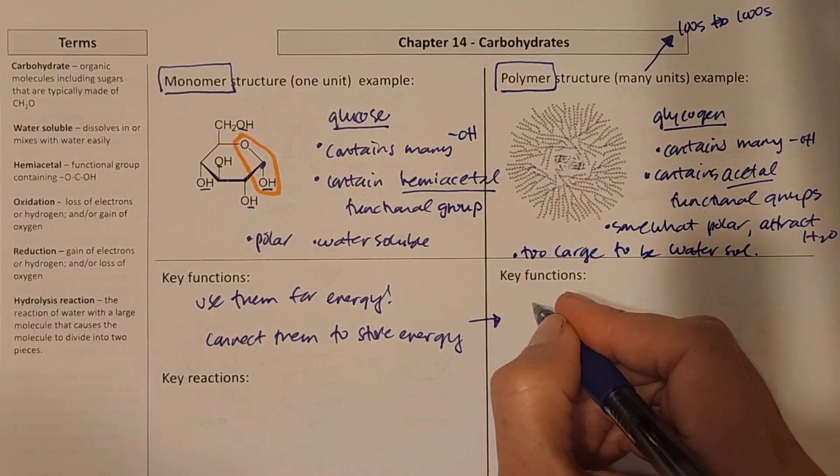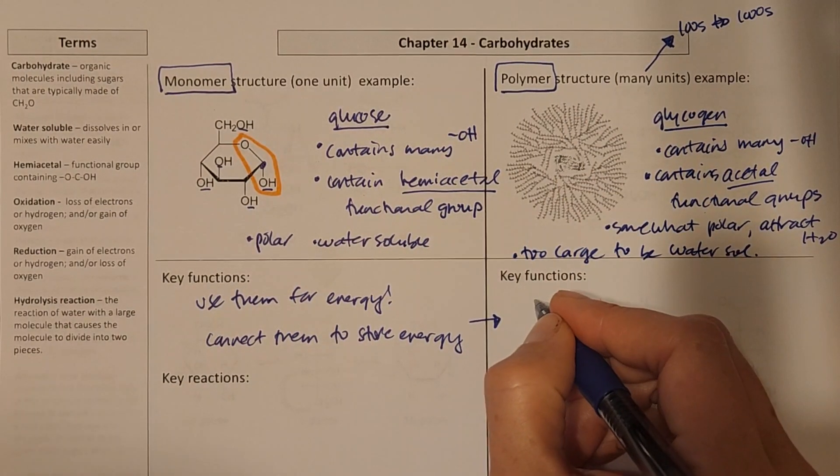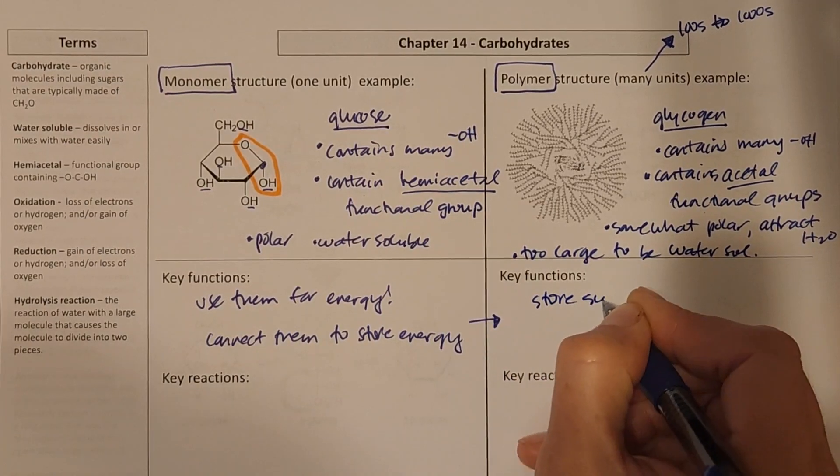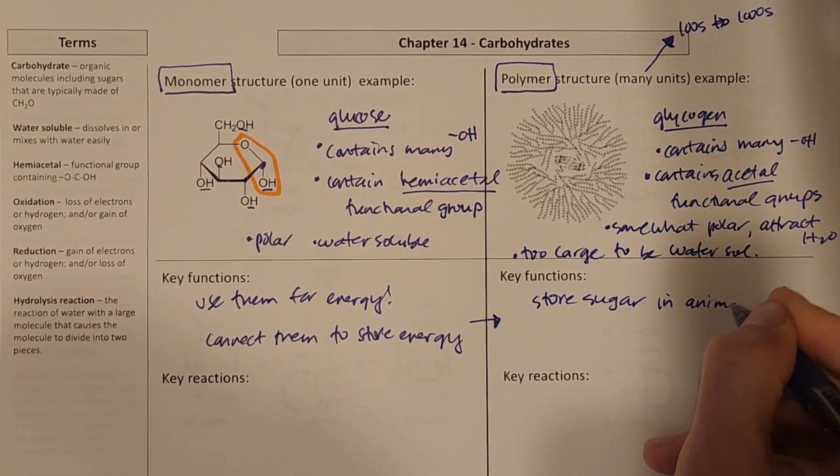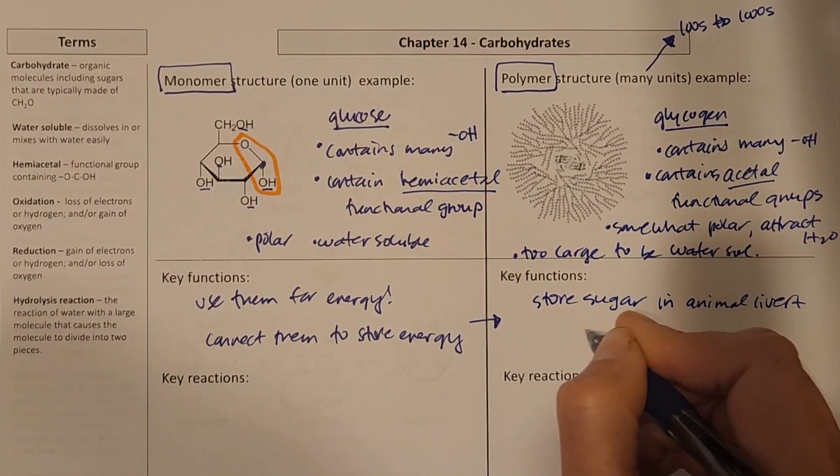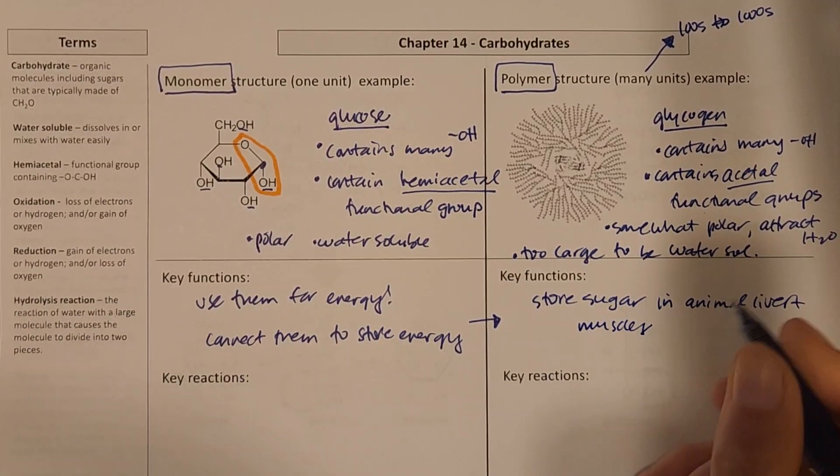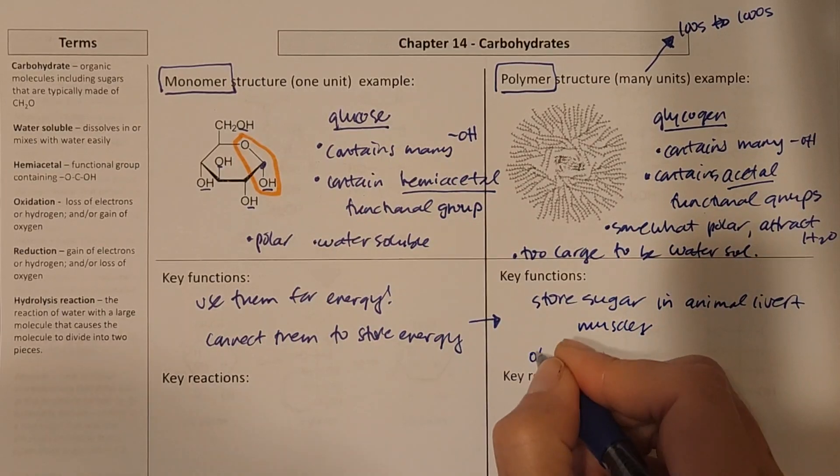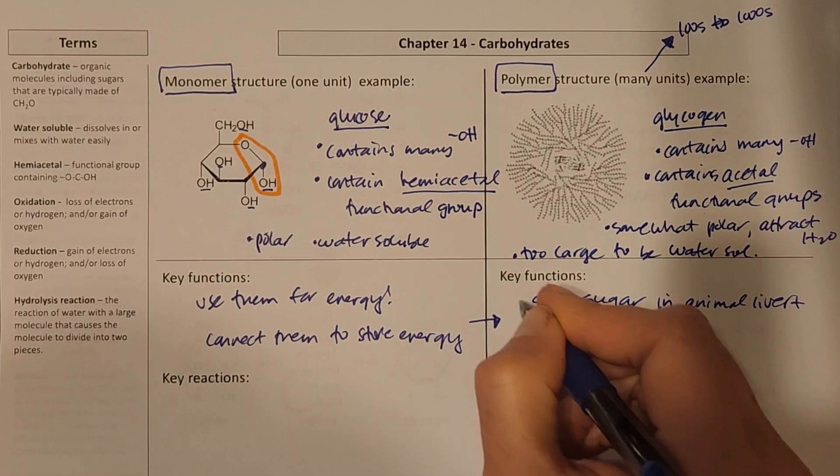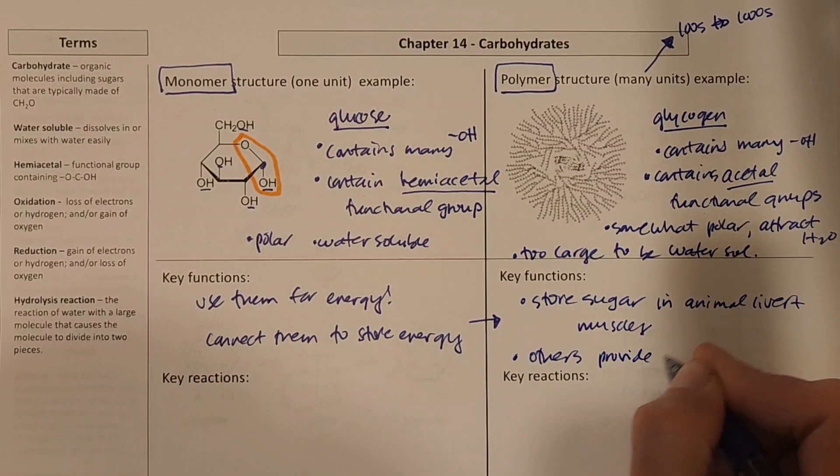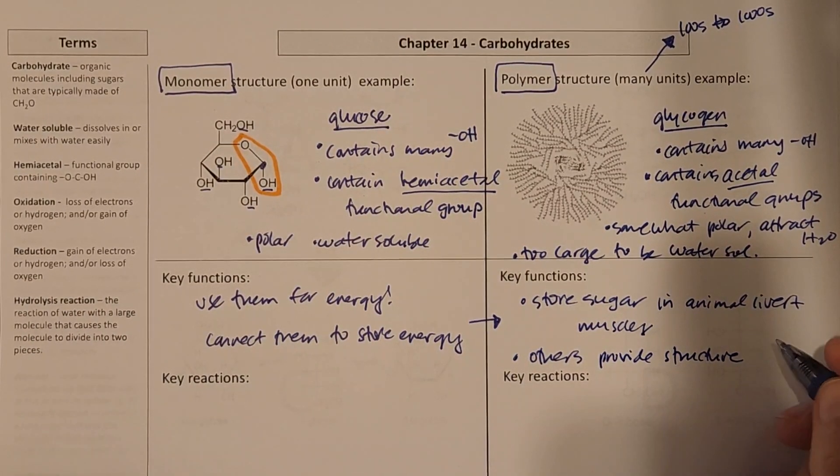Okay, key functions. These polymers are going to be used to store sugar. Glycogen in particular will store sugar in animal liver and muscles. And others, like especially in plants, but others can provide structure. And that would be like cellulose in plants.